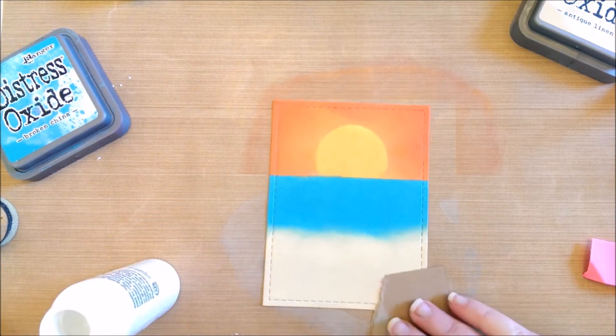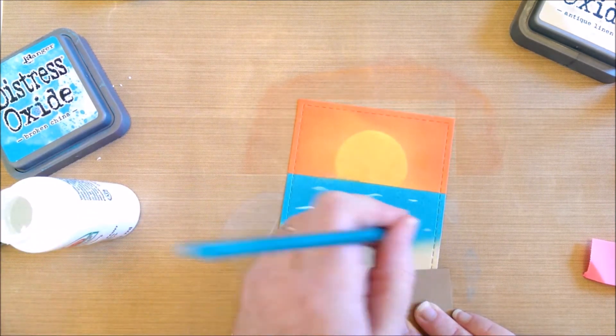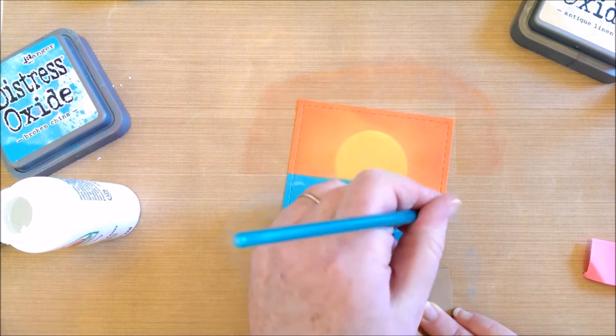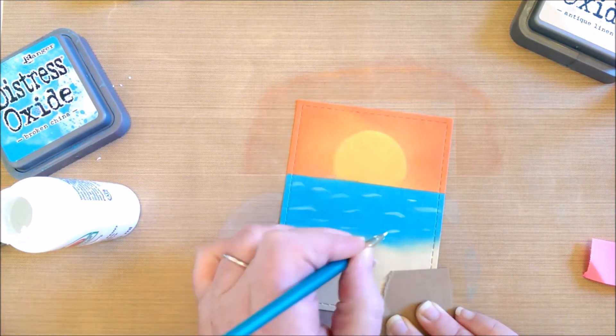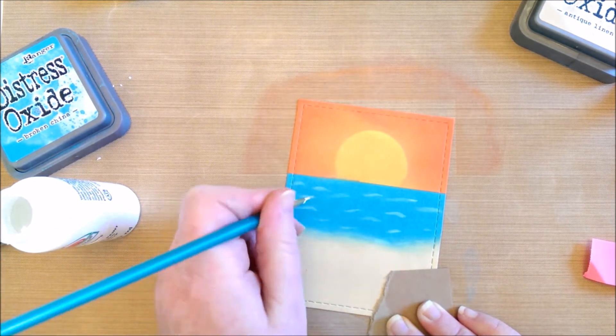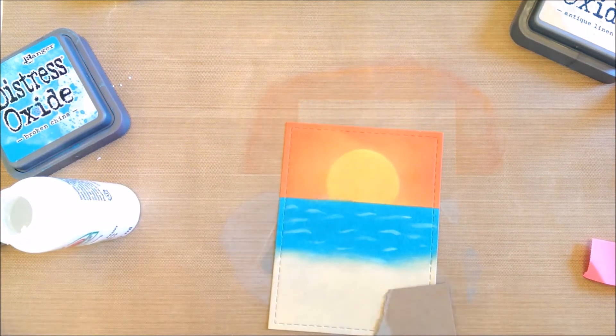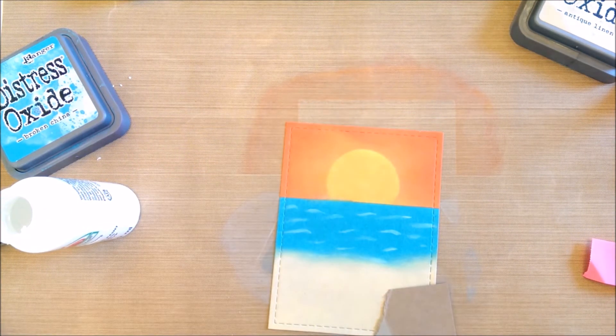Then I took some white acrylic paint and I'm just creating some waves in the sea with a small paintbrush. I rub that in so that the paint is quite light. Then I put two little seagulls in the sky.